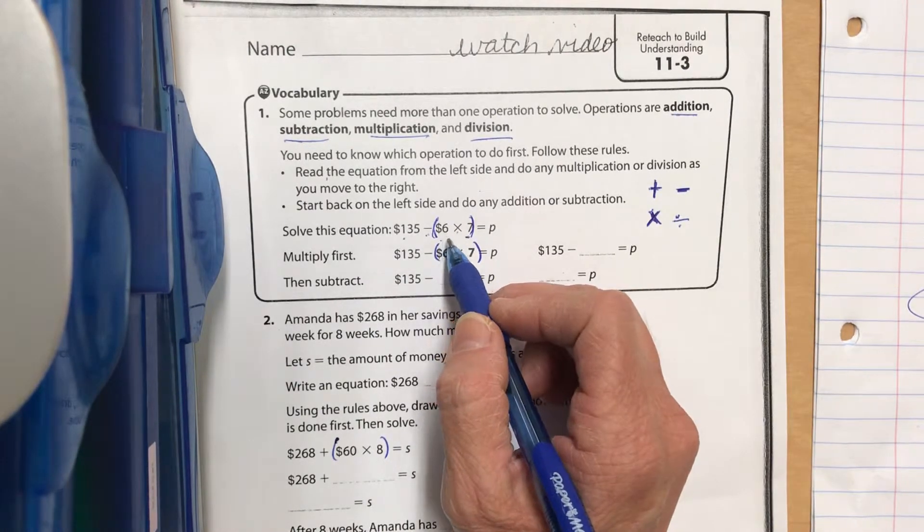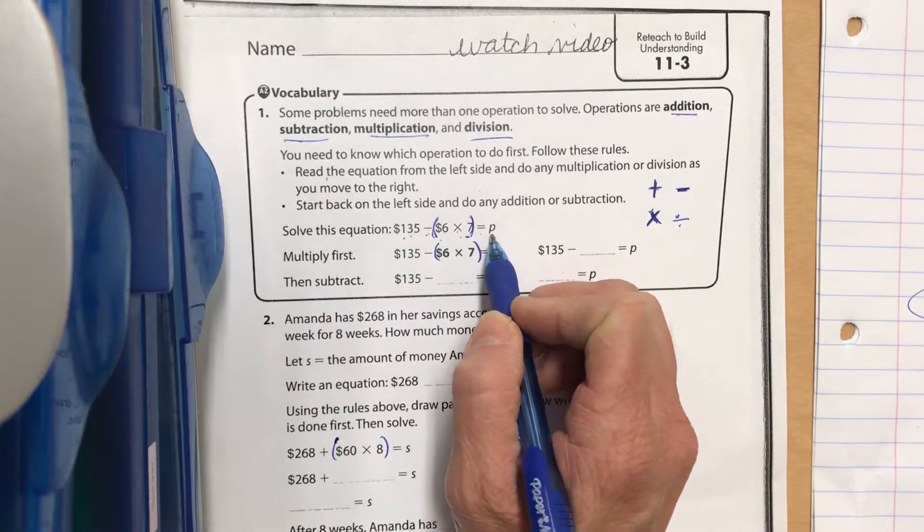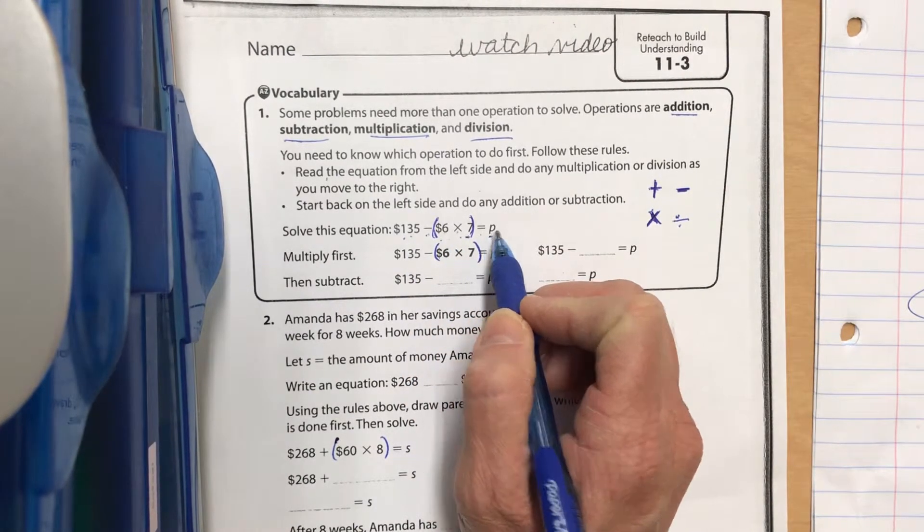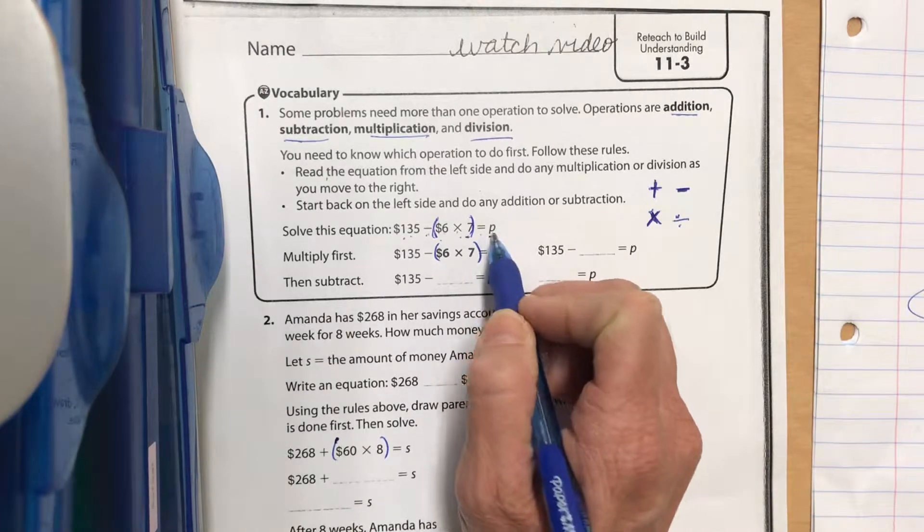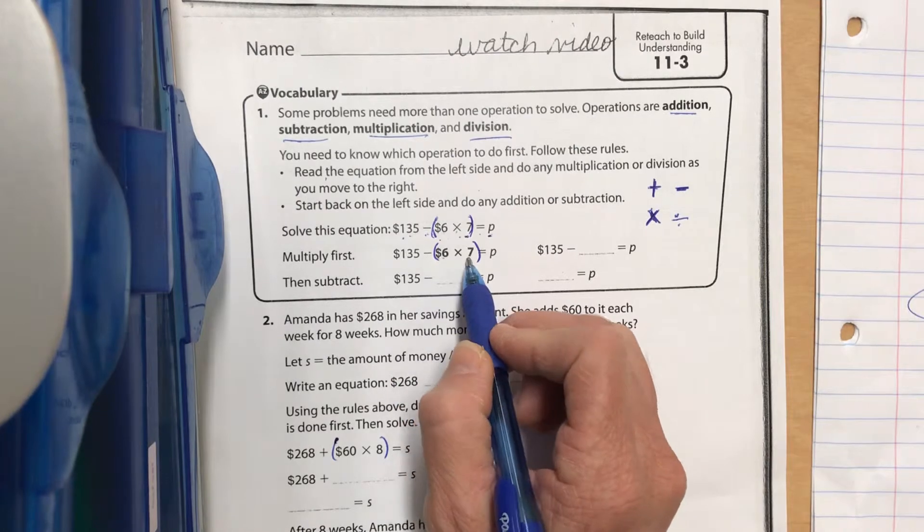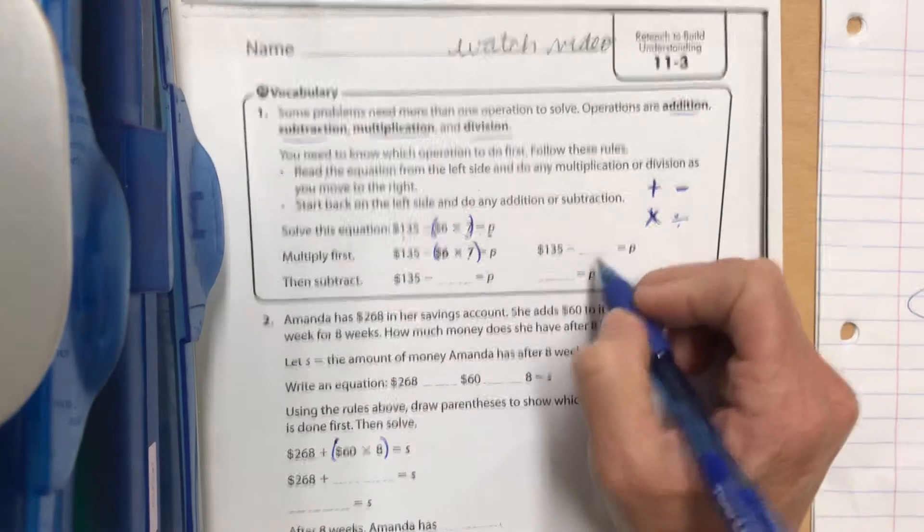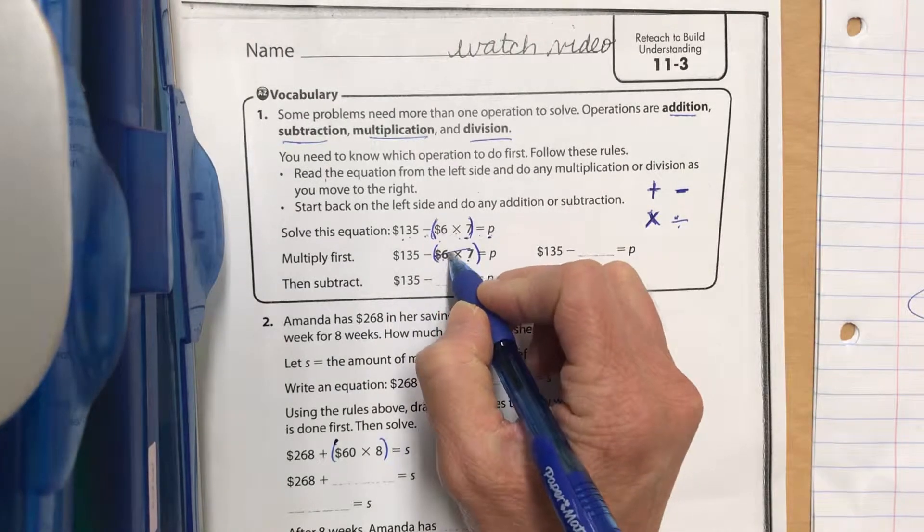First thing we want to do: 135 minus six times seven equals P. P is our unknown. We want to solve and figure out what number needs to go there. We want to multiply first. Six times seven is - pause it if you need to think about it - it's 42.